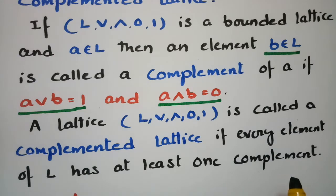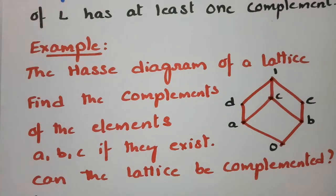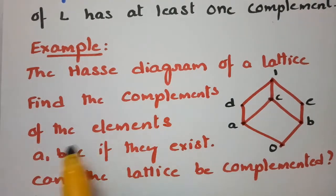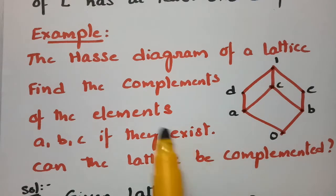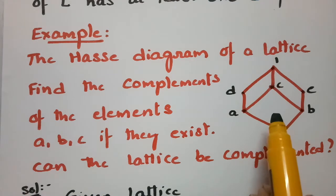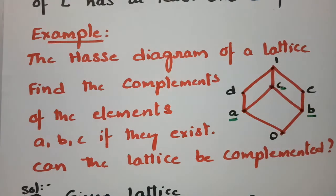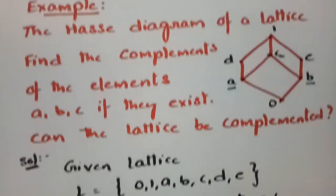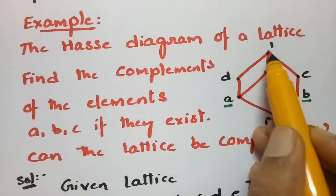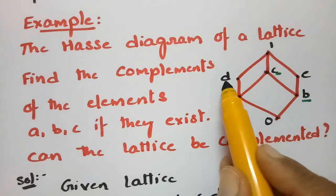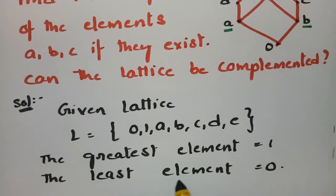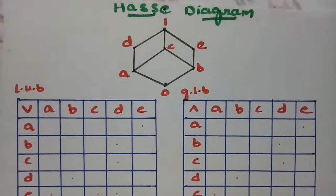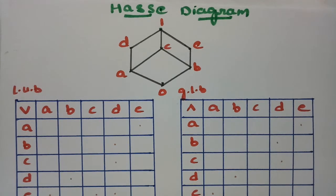An example is given using a Hasse diagram. The elements of the lattice are 0 (least element), 1 (greatest element), and intermediate elements A, B, C, D, and E. We need to find the complements of elements A, B, and C if they exist, and determine whether the lattice is complemented. Join is the least upper bound and meet is the greatest lower bound, read from the Hasse diagram.